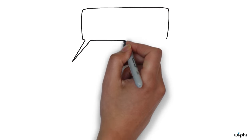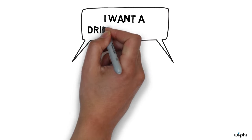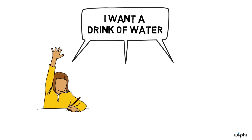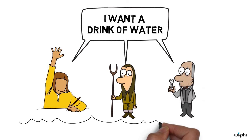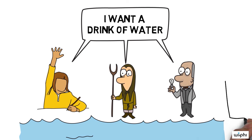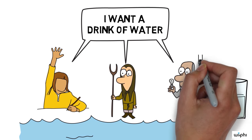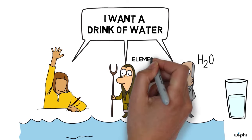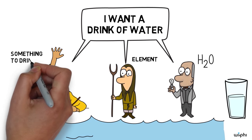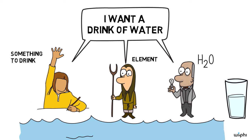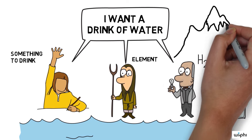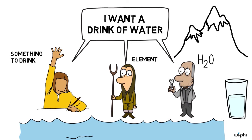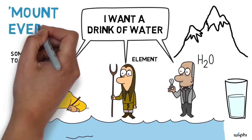Imagine the sentence 'I want a drink of water' said by a young child, a medieval peasant, and a chemistry professor. They can all meaningfully use the word 'water' because they've had the right kind of contact with the substance itself, not because they all share the same ideas about its nature. For semantic externalists, even secondhand contact can make something meaningful for you. You may not have been to Mount Everest yourself, but if you've seen photographs and heard stories from people who have been in contact with the mountain, then the expression 'Mount Everest' can have meaning for you.